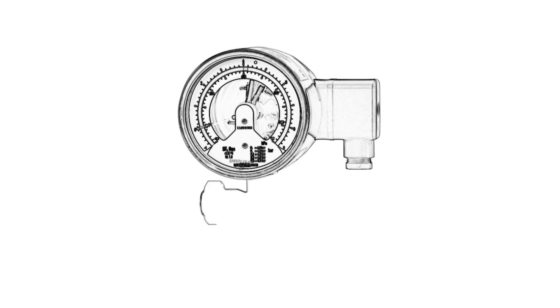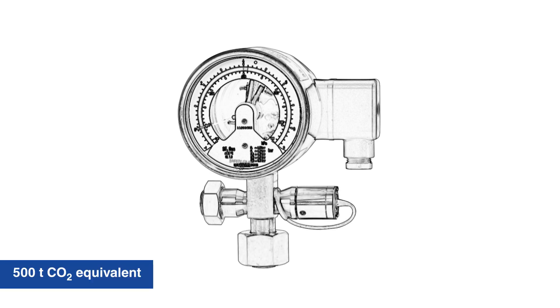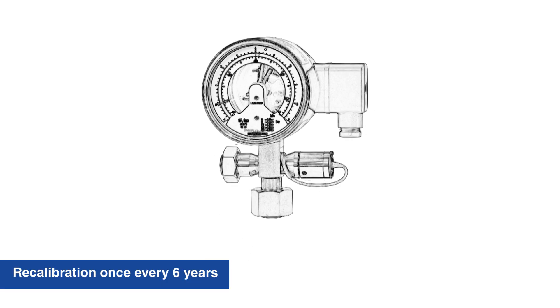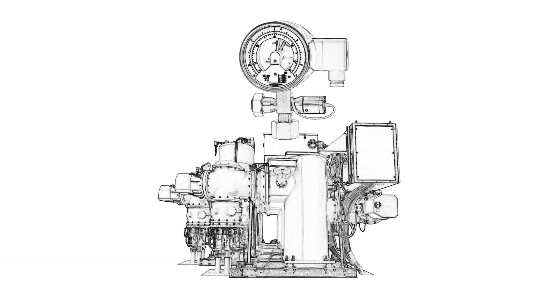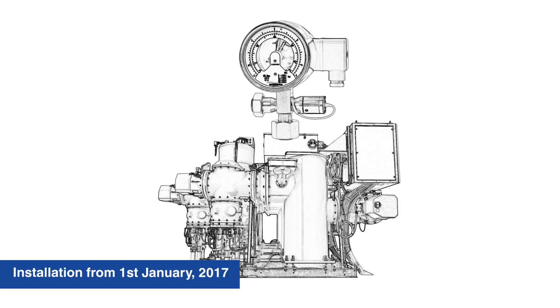Every leak detection system which monitors a gas tank containing fluorinated greenhouse gases in quantities of 500 tons CO2 equivalent or more must be recalibrated at least once every 6 years, as long as the electrical switchgear has been installed from 1st January 2017.